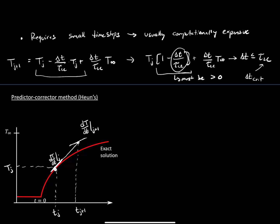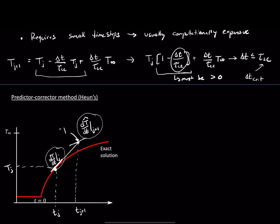Importantly, we're not actually going to take the step according to either of these — not according to the first derivative we estimated, or this one. We're going to call this estimate dt-hat, because we're not actually going to use it directly. So it's dt-hat/dt. We're calling this estimate of temperature T-hat at j+1.